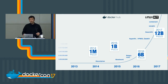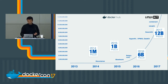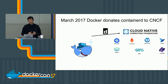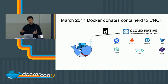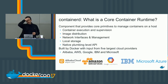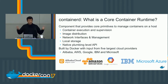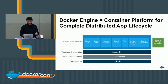As Docker grew in the past few years, we extracted lots of different components. The most recent one was in March at the KubeCon and Cloud Native Conference, where we donated ContainerD to the CNCF. ContainerD is a core container runtime — it's the component that allows you to do container execution, as well as image distribution and local network interface management. It's built by Docker, but with input from the five largest cloud providers.